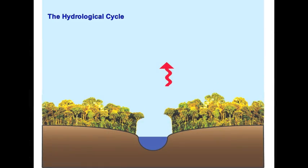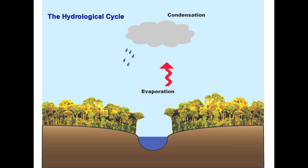The hydrological cycle begins with the evaporation of water, be it from the surface of the ocean or the land. As moist air is lifted, it cools and the water vapor condenses to form clouds. When clouds become heavier with condensed water, precipitation occurs.